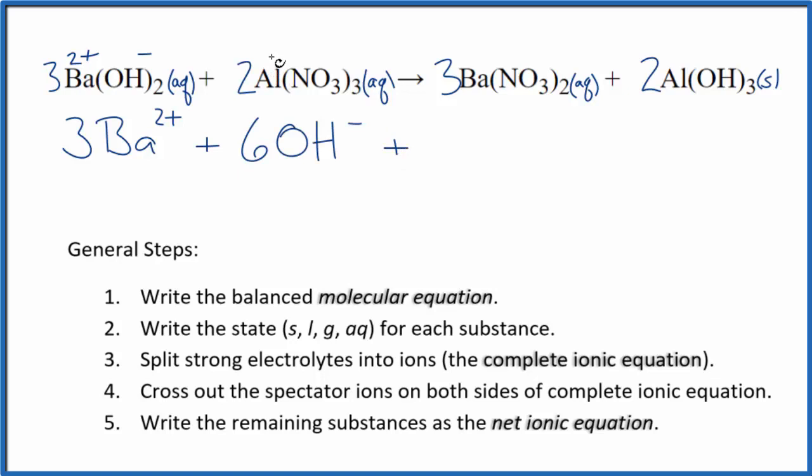We have aluminum, group 13, sometimes called 3A. That's 3+ for the whole nitrate, 1-. So we have two aluminum ions. That's Al3+. And then we have two times three, six nitrate ions. And these are the reactants in our net ionic equation.